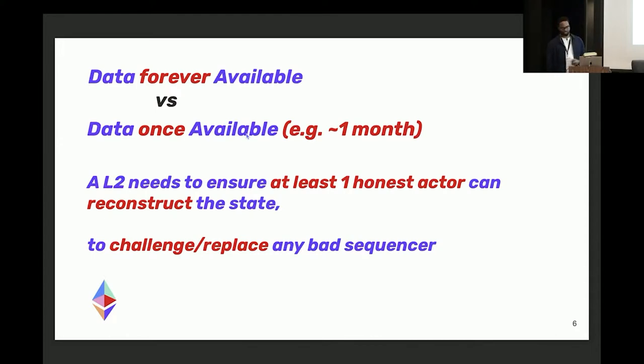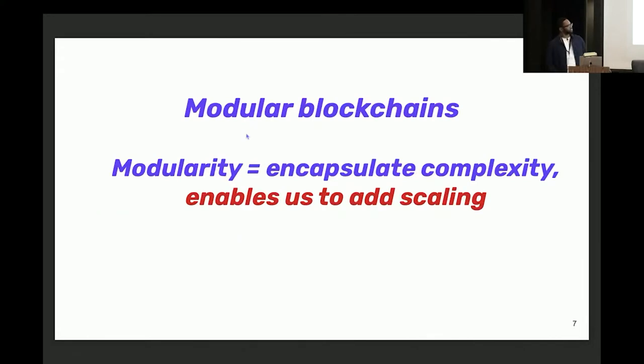This ties back to the execution check I mentioned. The point of that data is so that we can challenge any bad sequencer, which is the entity that's building your rollup chain and posting it back to L1. So let's do a quick segue into modular blockchains. Ethereum has actually become quite modular, particularly since the merge that just happened. And why is this useful? It lets us encapsulate feature sets and complexity into one thing that's easy to reason about and keep things completely separate so we can scale one thing without introducing complexity in another thing.